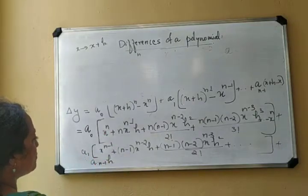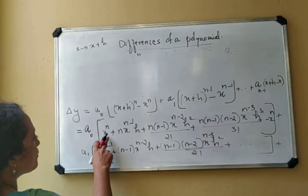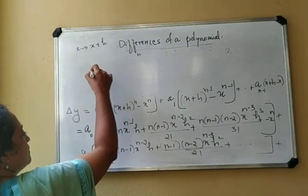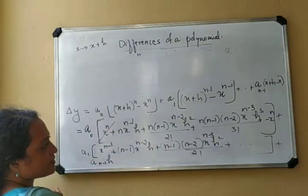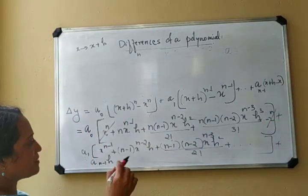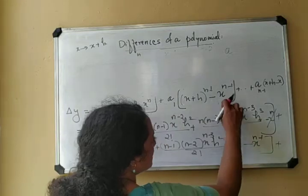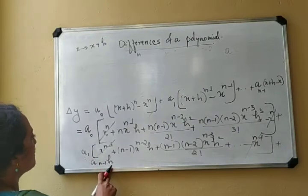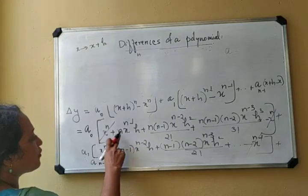Looking at the coefficient of x^n: there is a0·x^n and here minus x^n, so these terms get cancelled. Similarly, the x^(n-1) term from the a1 expansion also gets cancelled. So the first surviving term is a0·n·h·x^(n-1).